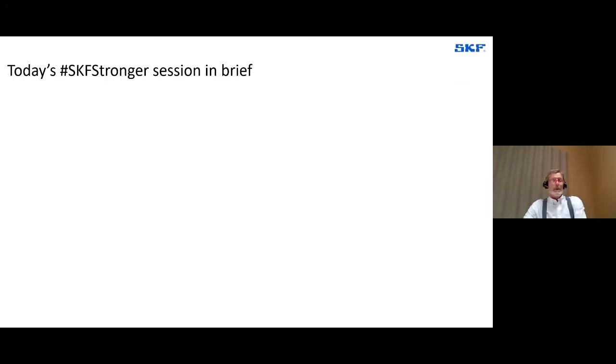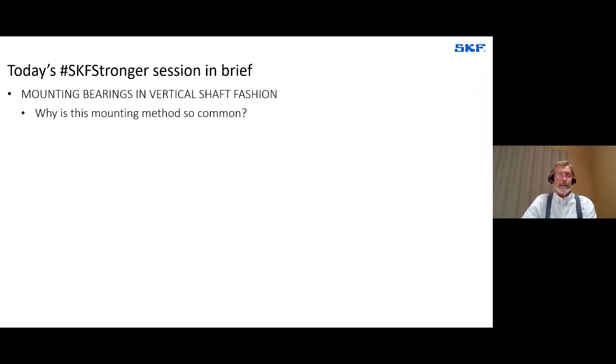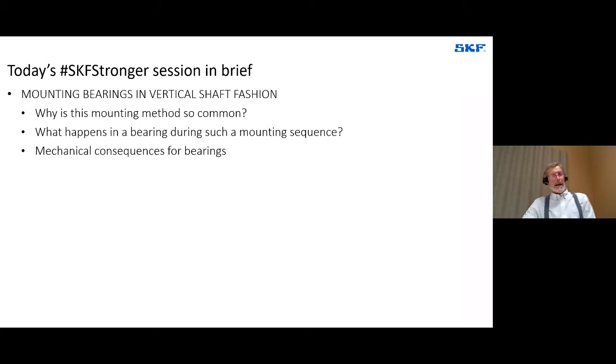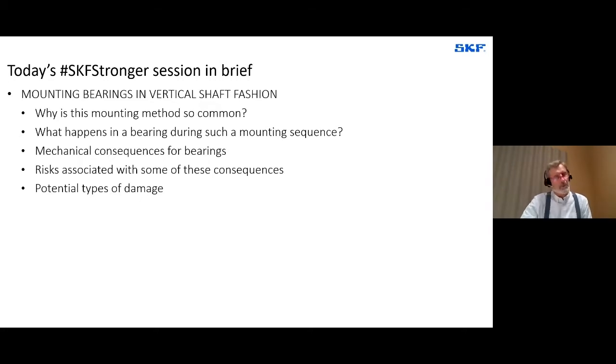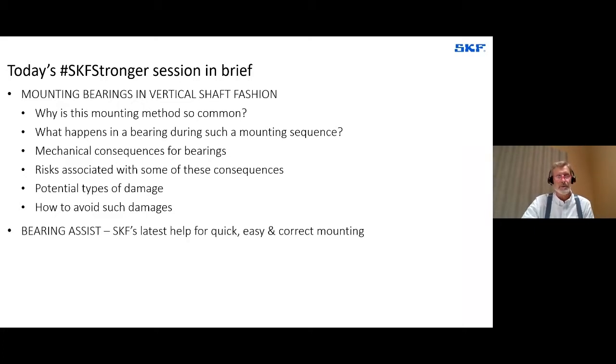In brief today, we will look at mounting bearings in vertical shaft fashion. Some words on why this is a common method. And we will dive a bit deeper looking at what happens inside a bearing during such a mounting sequence. And try to see if there are any mechanical consequences of that. And pinpoint a couple of risks associated with the consequences. I will touch upon some potential damage types and of course we should spend time on how to avoid such damages. And finally, we will wrap up with Linus again talking about bearing assist.